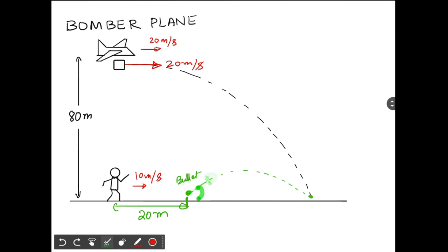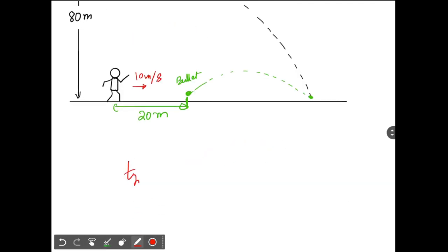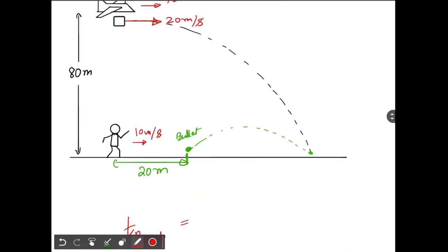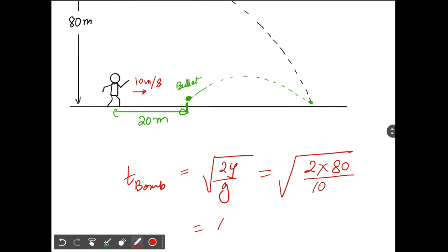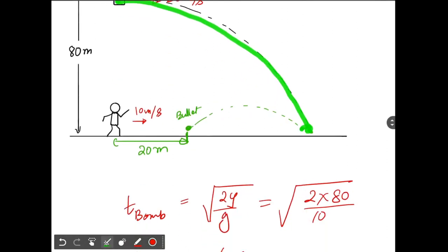We don't know the speed of the bullet or the angle theta, so let's start with the bomb. Along the vertical direction, the bomb covers a height of 80 meters. Initially the bomb has velocity 20 m/s along the x-axis and no velocity along the y-axis. The time taken by the bomb is root of (2y/g), which is root of (2 × 80 / 10), equal to 4 seconds.